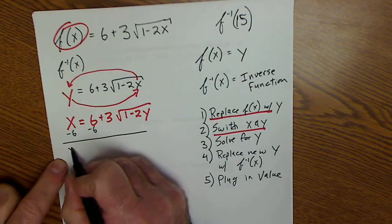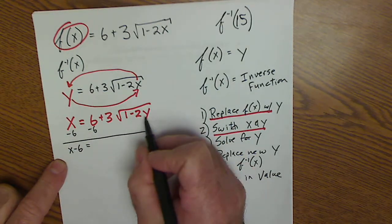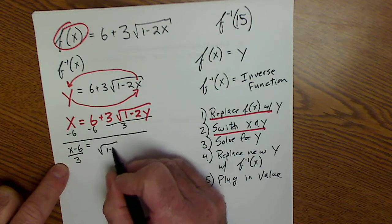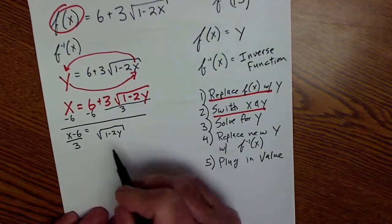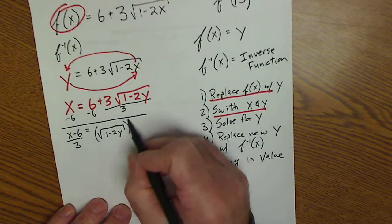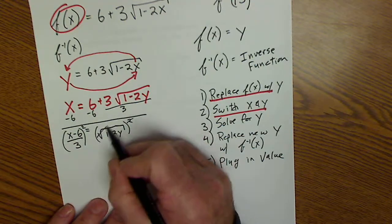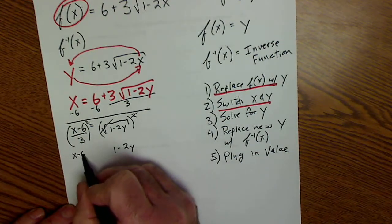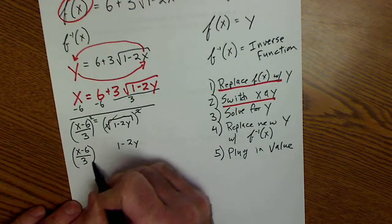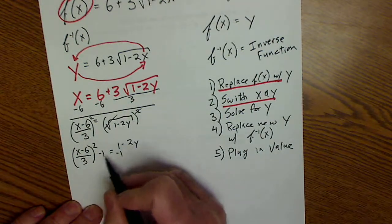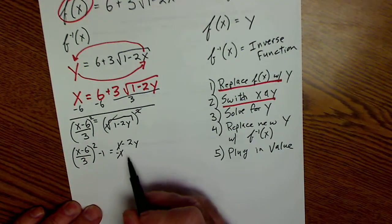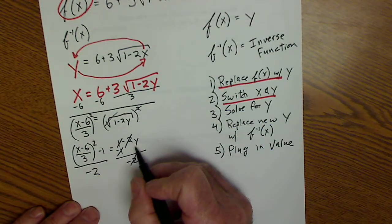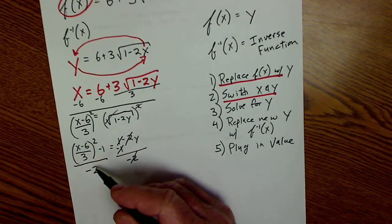Now I need to solve for y. Subtract 6 from both sides to get x − 6 = 3√(1 − 2y). Divide both sides by 3, then square both sides — the square and square root cancel — giving 1 − 2y = ((x − 6)/3)². Subtract 1, then divide both sides by −2, and y is now isolated.